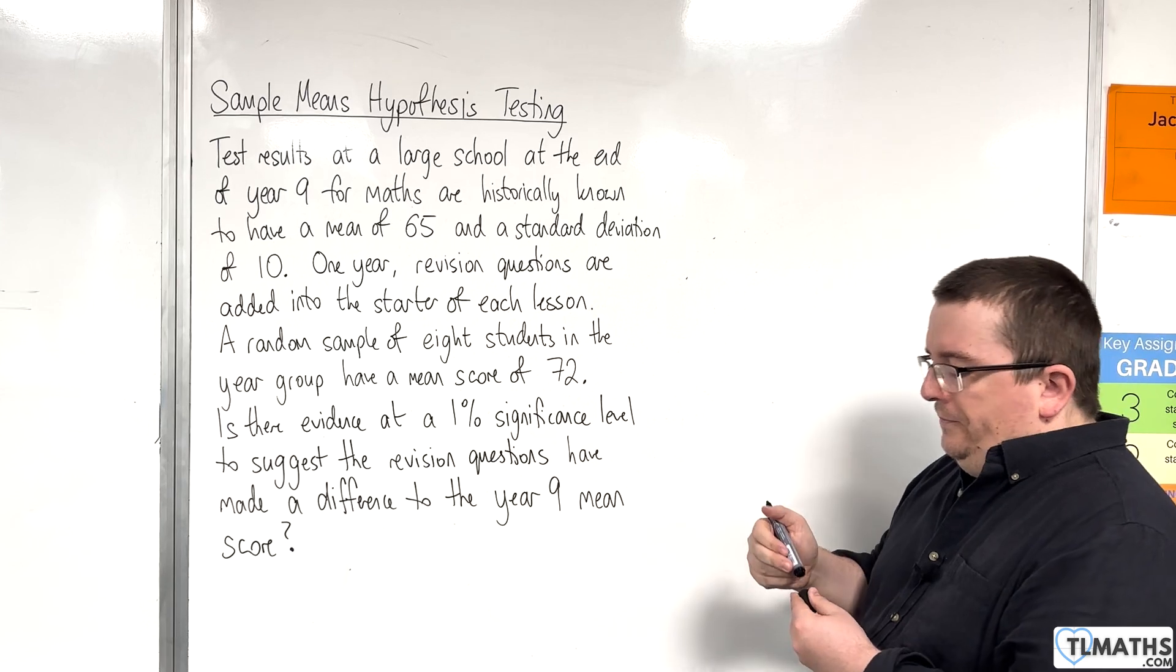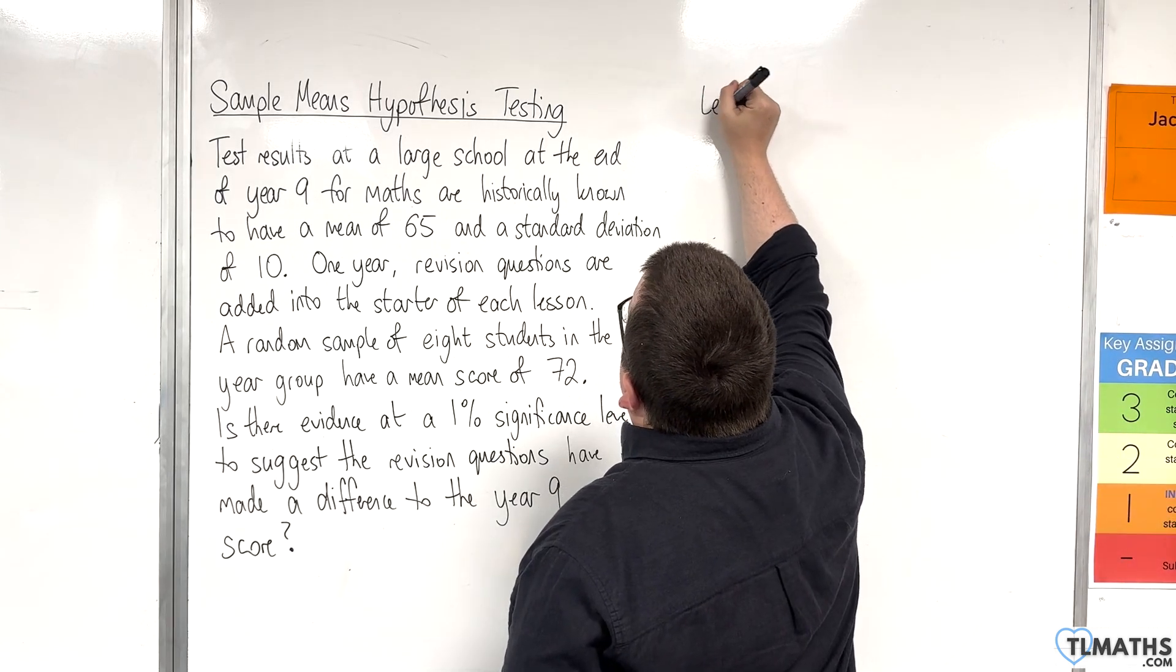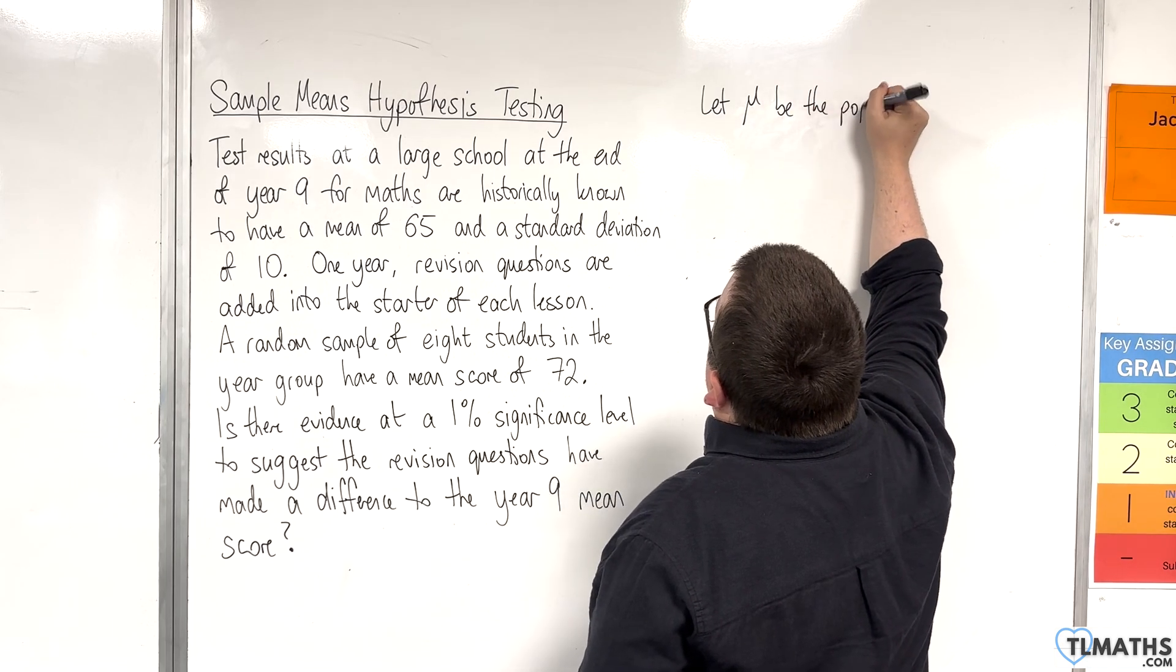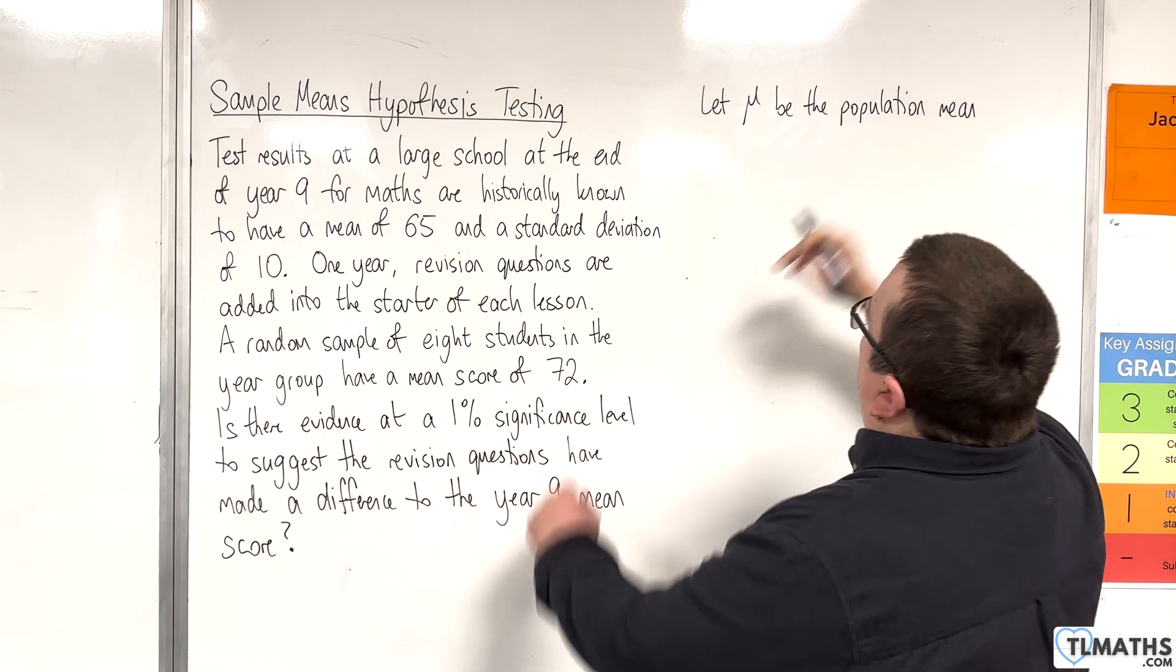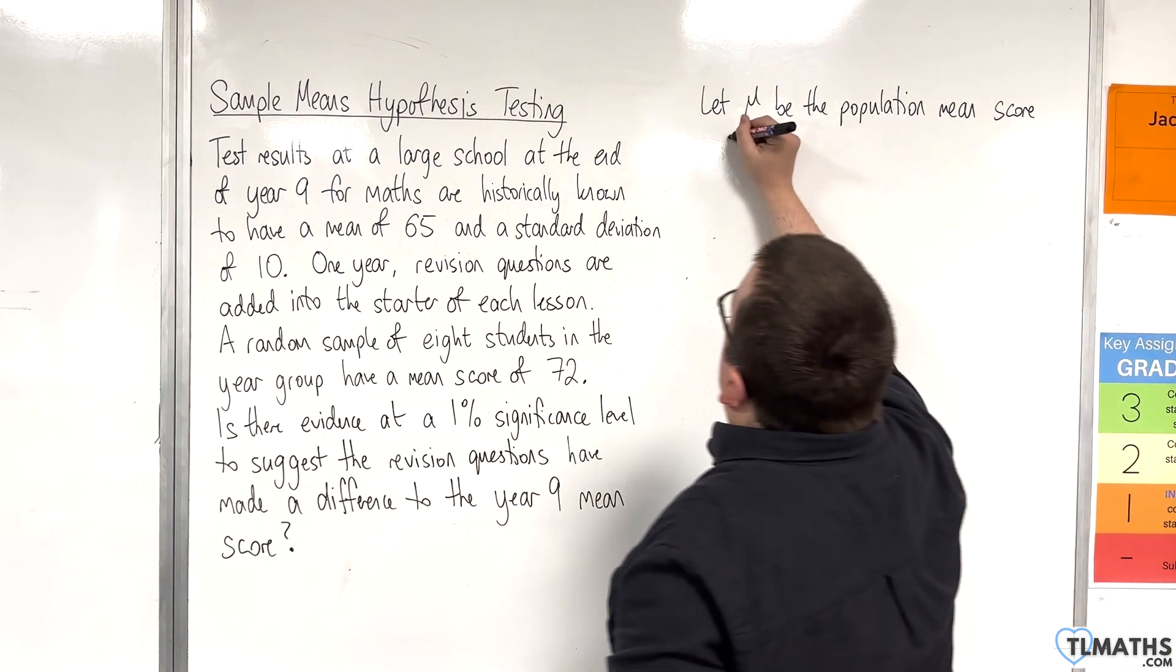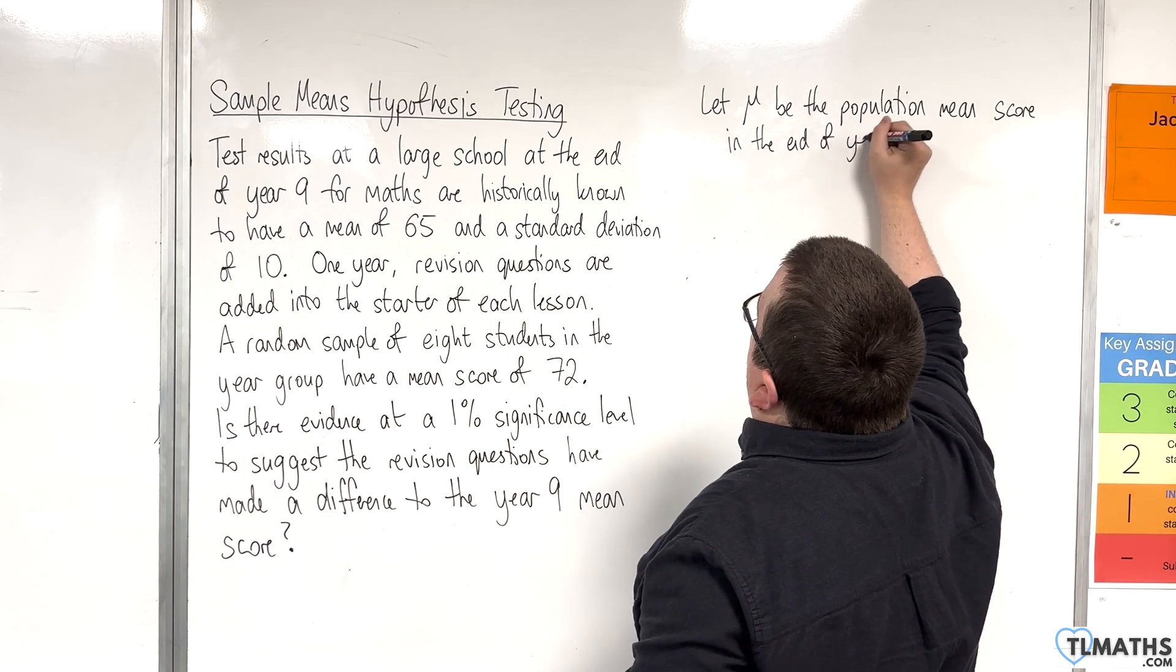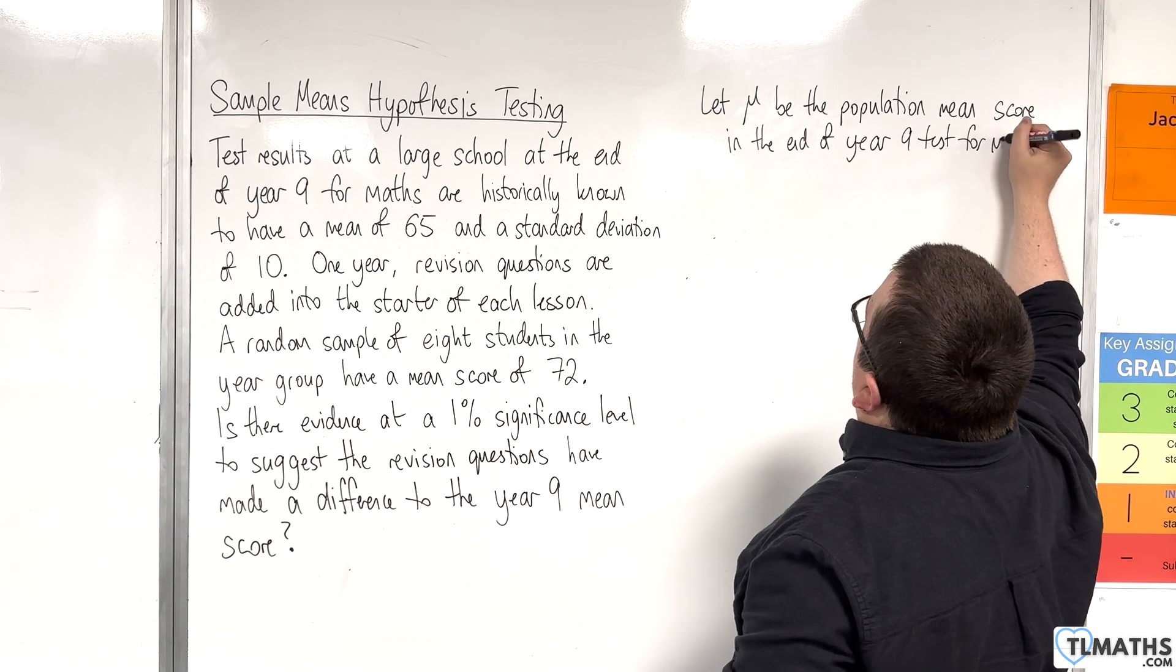OK, so let's start off with defining mu. Let mu be the population mean score in the end of Year 9 test for maths.